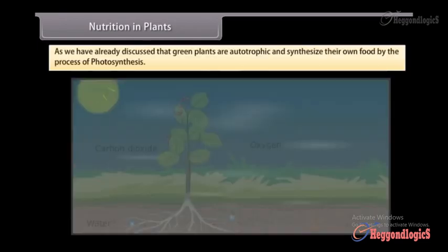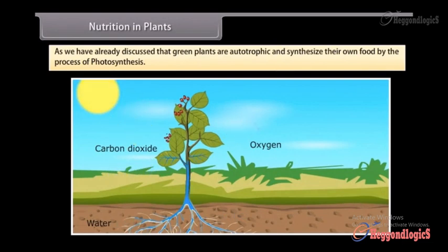Nutrition in plants. As we have already discussed, green plants are autotrophic and synthesize their own food by the process of photosynthesis.